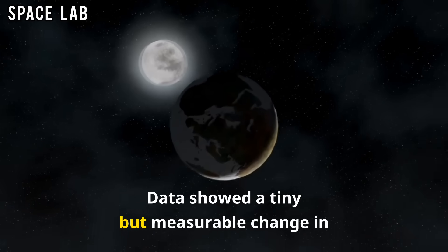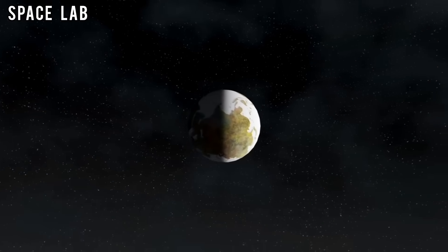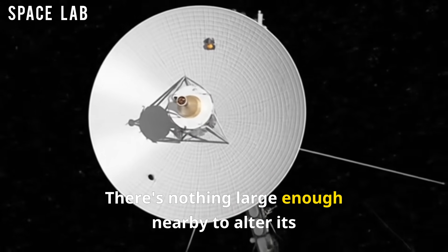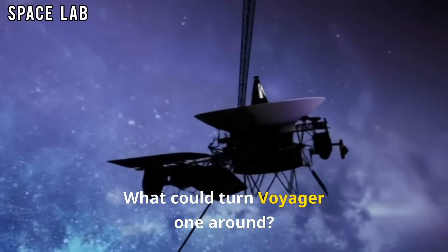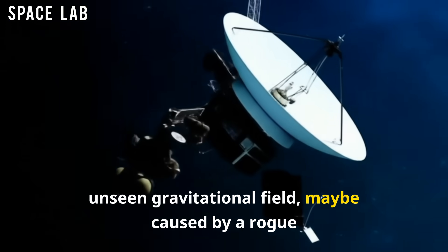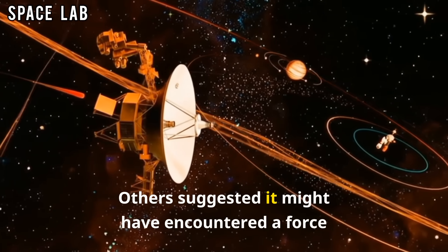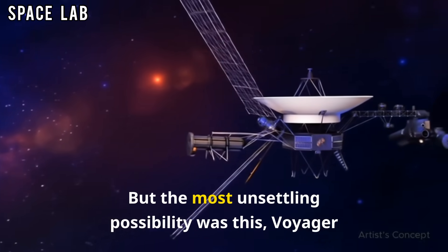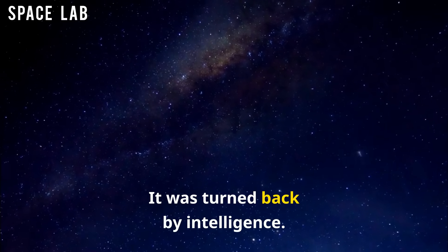Data showed a tiny but measurable change in trajectory, as if something invisible had nudged it, pulling it back toward the solar system. No natural explanation made sense. Interstellar space is nearly a vacuum. There is nothing large enough nearby to alter its path. Some scientists speculated it had crossed into an unseen gravitational field, maybe caused by a rogue planet or even a black hole. Others suggested it might have encountered a force we don't yet understand. But the most unsettling possibility was this: Voyager wasn't turned back by nature. It was turned back by intelligence.